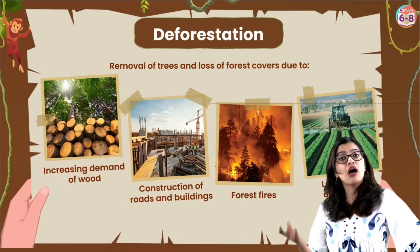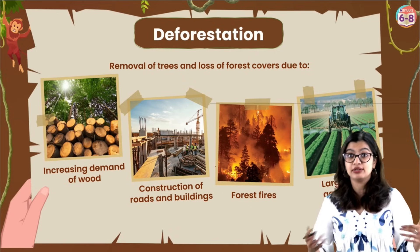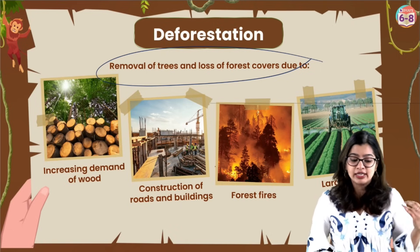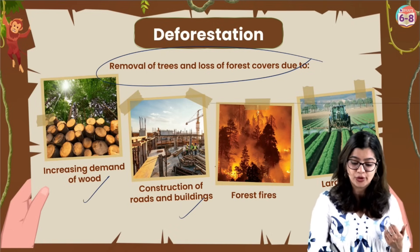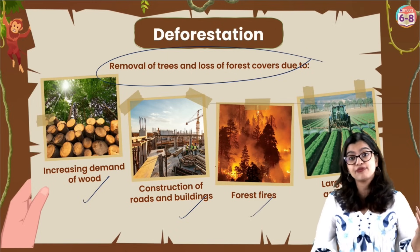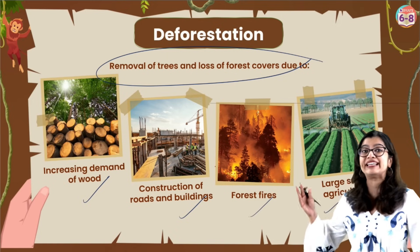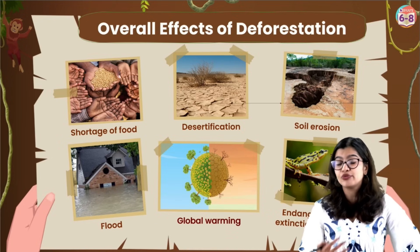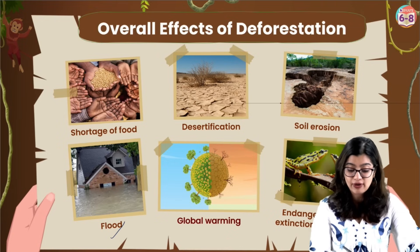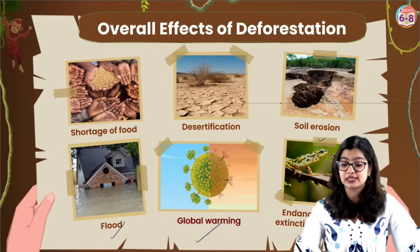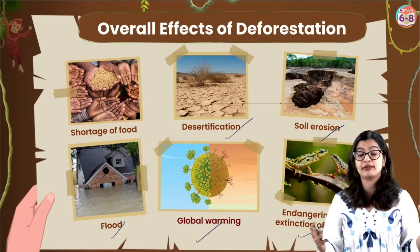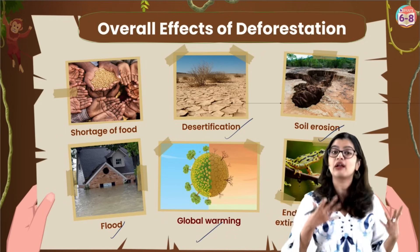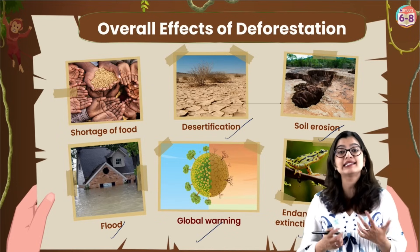Over a period of time, large areas of forest have been deforested. Deforestation means the loss or removal of forest cover. This is due to increasing demand for wood, construction of roads and buildings, forest fires, and the need for agricultural land. This is dangerous because it can cause food shortages for tribal people and animals, floods, global warming, loss of habitat, and soil erosion. Eventually the soil loses its fertility, turning land into a desert-like state — a process known as desertification.